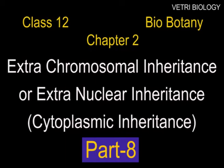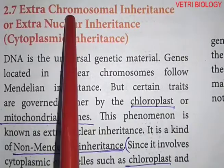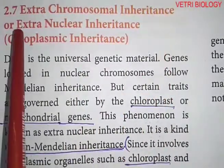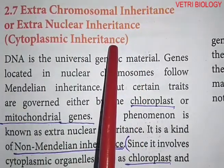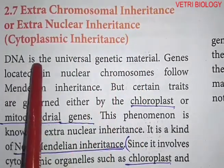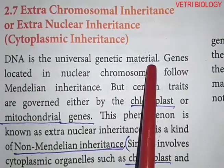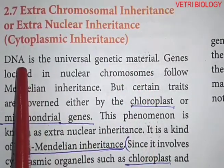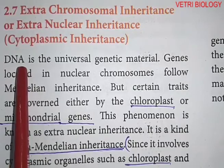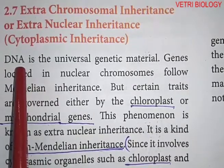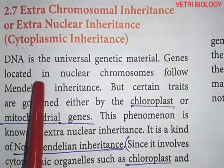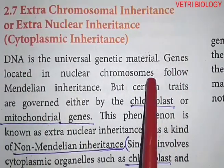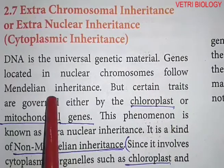Dear children, in the previous class we learned about intergenic interaction. Now let us learn extra chromosomal inheritance, also called extra nuclear inheritance or cytoplasmic inheritance. DNA is the universal genetic material — it is the heritable molecule. Genes are made up of DNA, and these genes are located in nuclear chromosomes and follow Mendelian inheritance.